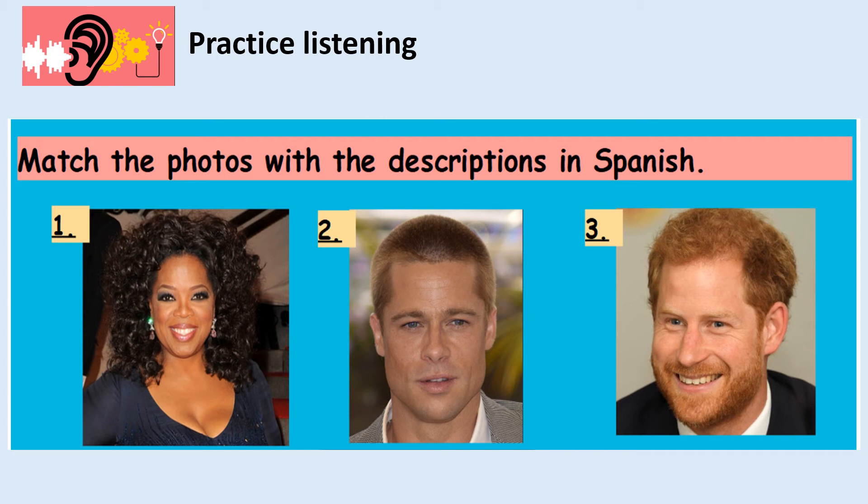Description C. Tiene el pelo corto y rubio. No lleva gafas. Which photo is it? One, two or three.